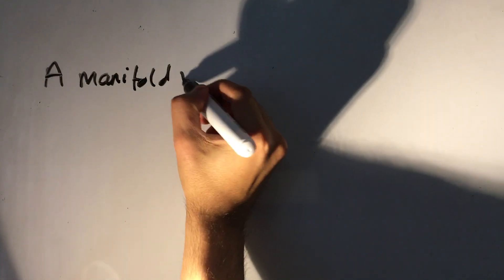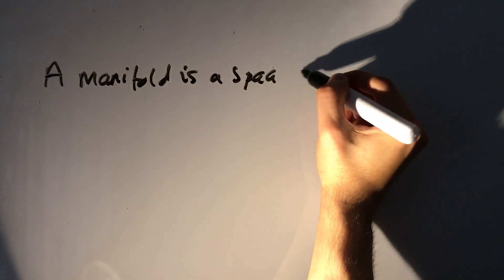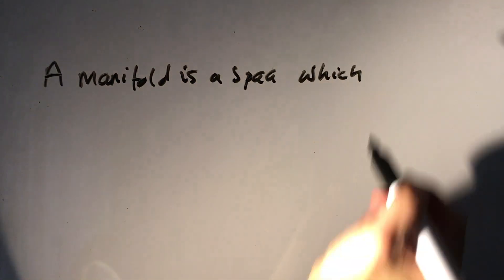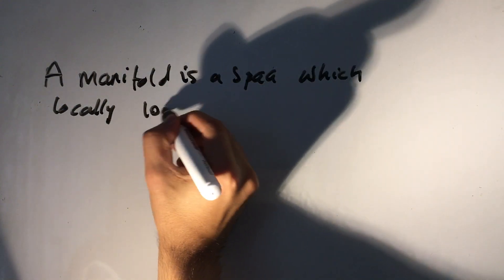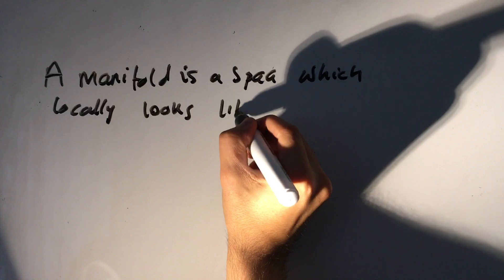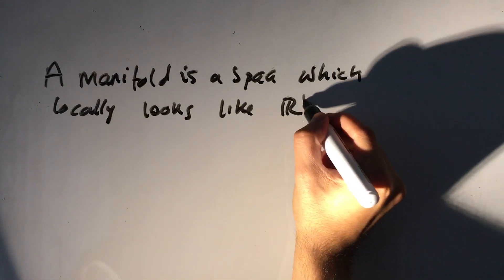So quickly starting, a manifold is a space which locally looks like the real corner space R^M.